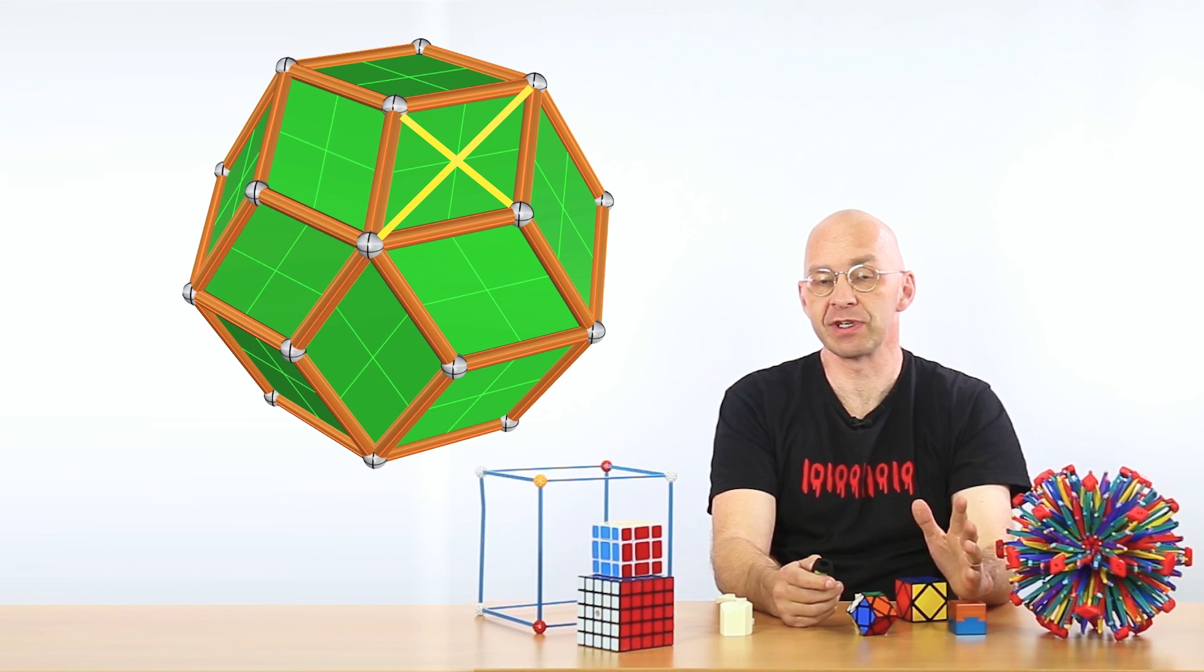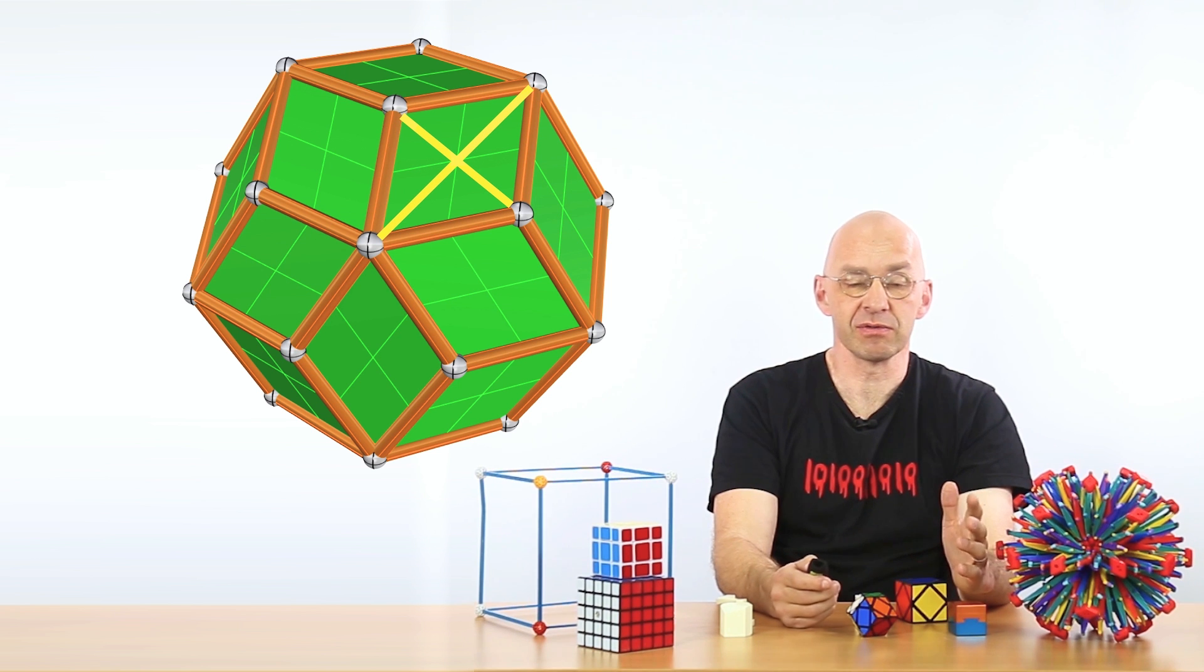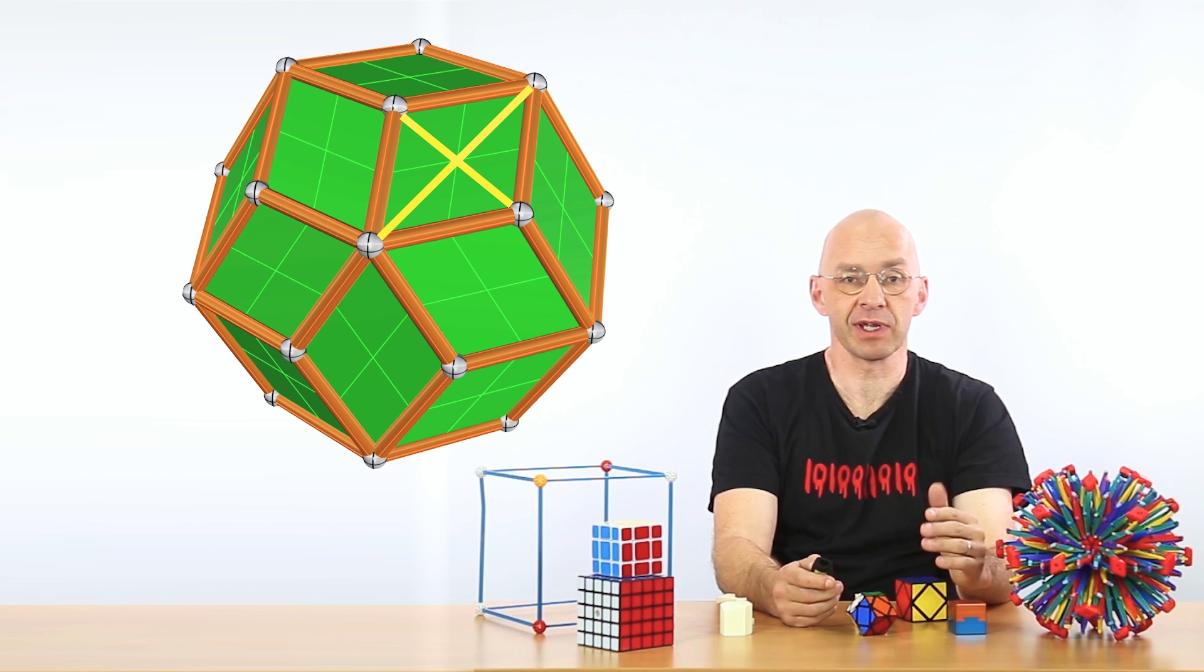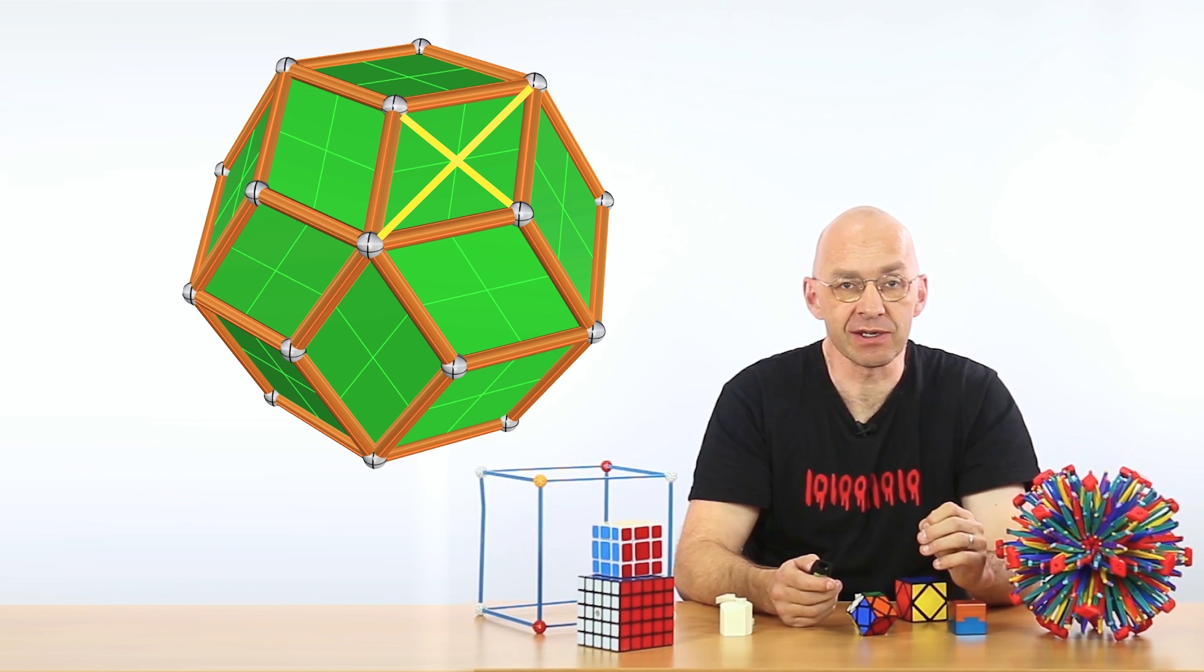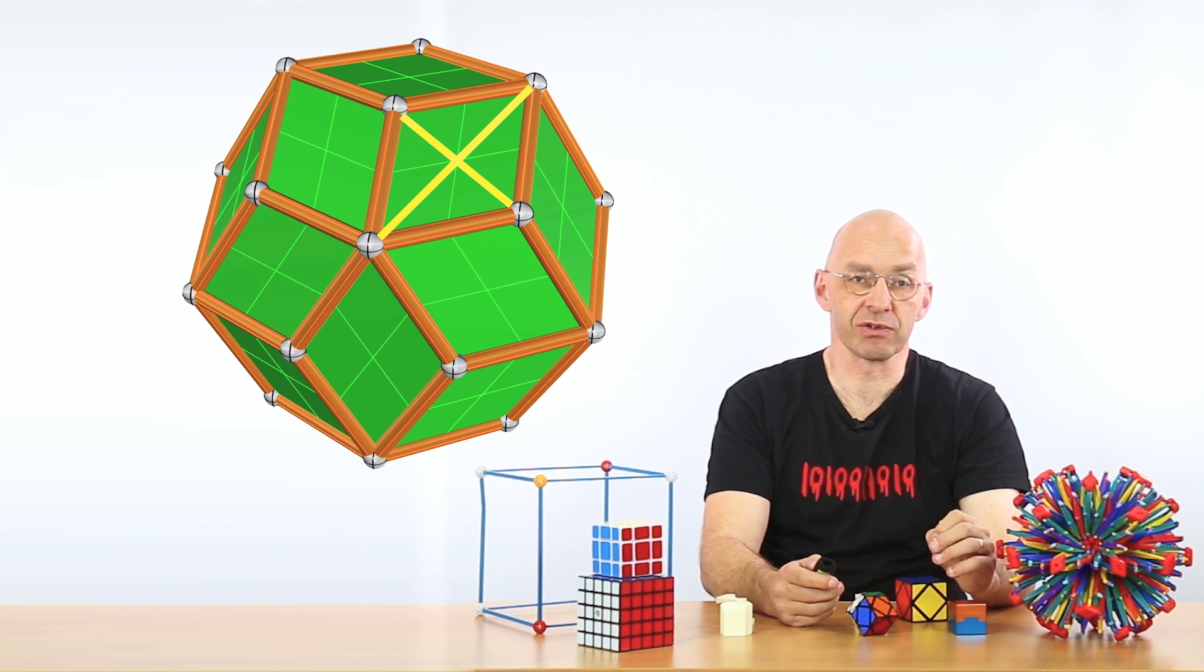Now every one of the 30 faces is a golden rhombus. How is it golden? Well, if you take the long diagonal and divide it by the short diagonal, you actually find it's the golden ratio. So that makes it a golden rhombus.